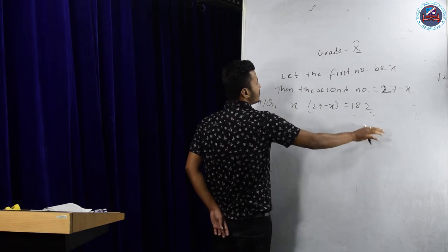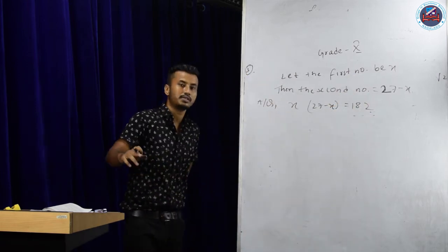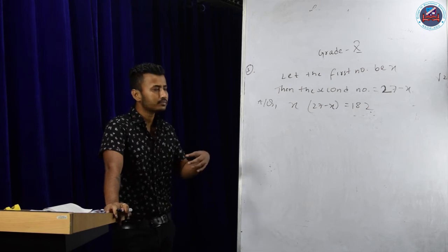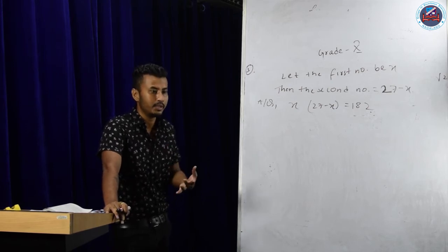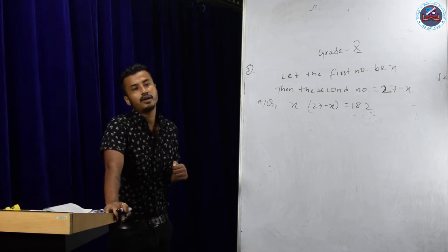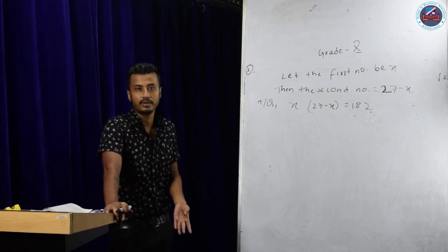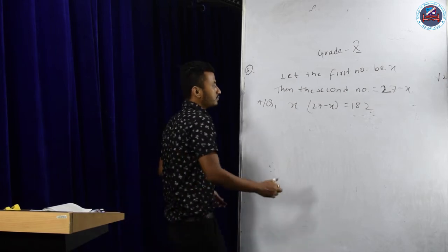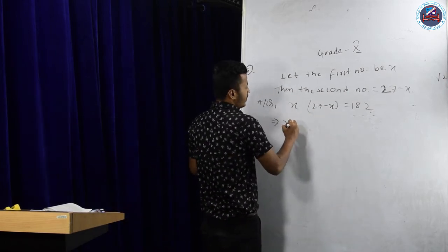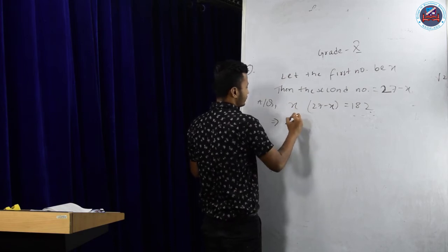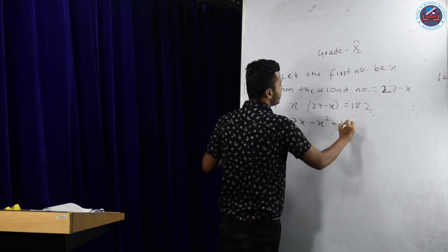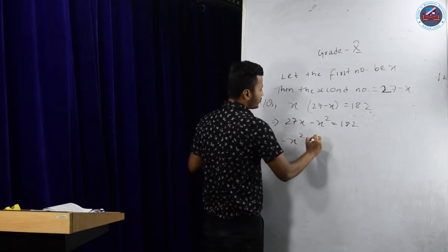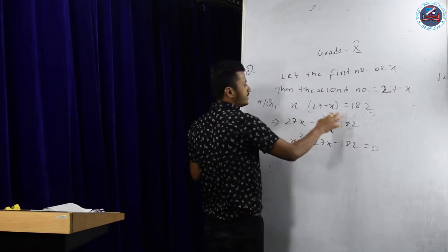Why did I take only one variable x and not introduce y? Because this is a quadratic equation, not a linear one — all variables must be the same. If you are working in terms of x, everything must be expressed in x only; you don't mix two variables. Expanding: 27x minus x² equals 182. Bringing all to one side: minus x² plus 27x minus 182 equals zero.